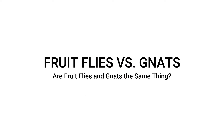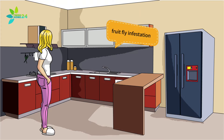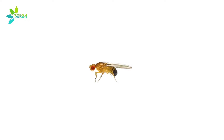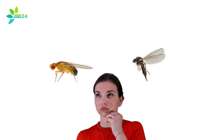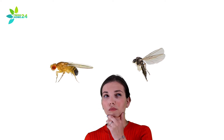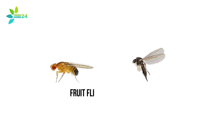Fruit flies versus gnats — are they the same thing? If you've discovered a swarm of tiny flying insects buzzing around your kitchen that resembles a housefly, you may automatically conclude that you have a fruit fly infestation. However, you may not be dealing with fruit flies at all — these small flies could be gnats. The easy answer is no, fruit flies and gnats are not the same thing.